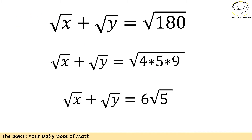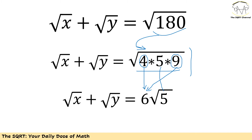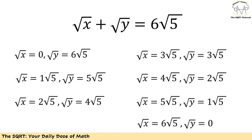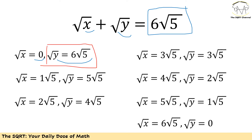To solve this problem, we are going to do a few tricks. First, we write 180 as 4 times 5 times 9. We know that 4 is 2 squared and 9 is 3 squared, so radical 180 simplifies to 6 times square root of 5. Since the values are integers, we need to divide 6 times square root of 5 into two parts. Starting with nothing for x and everything for y: radical x equals 0 and radical y equals 6 times square root of 5.